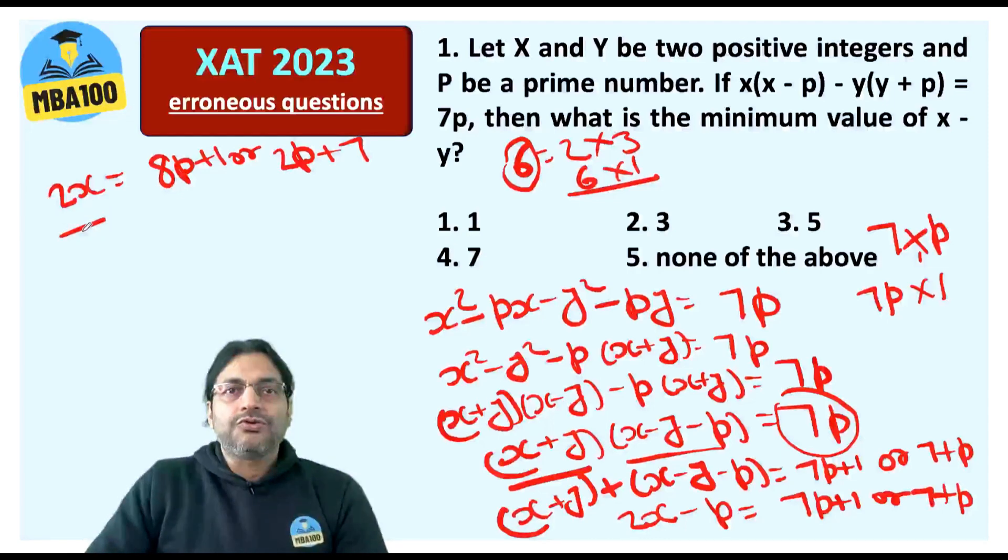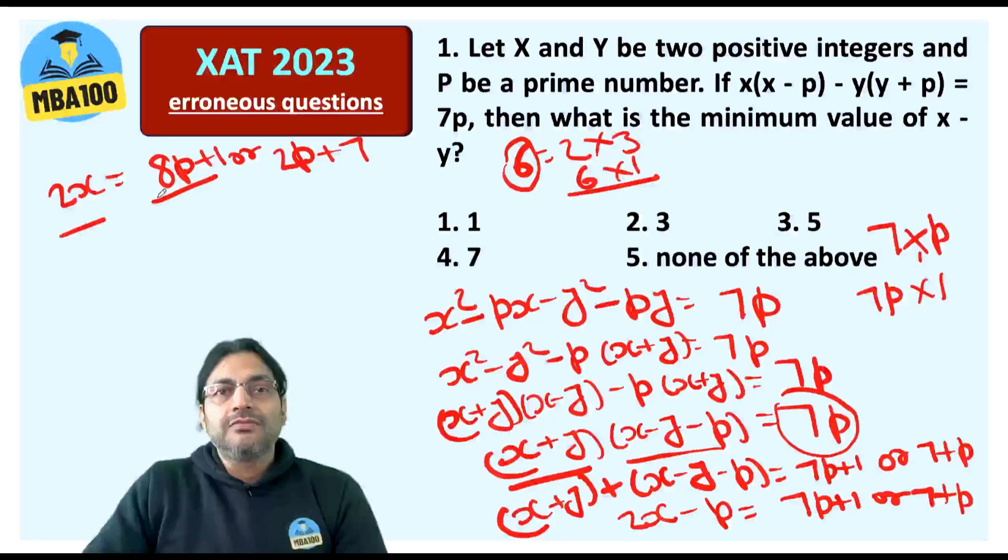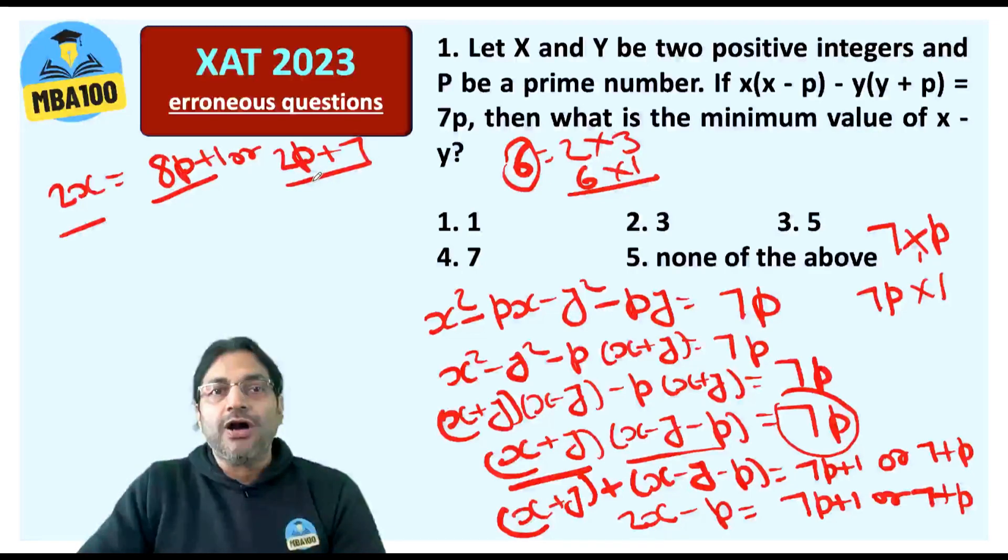Now 2X is always an even integer. 8P + 1 is always odd. Whatever be the value of P, 8P + 1 will always be odd. Because 8P will always be even, 8P + 1. Similarly 2P + 7 will always be odd. So this is impossible.